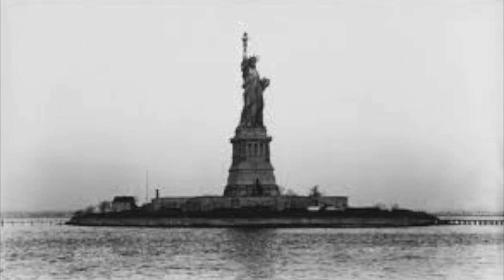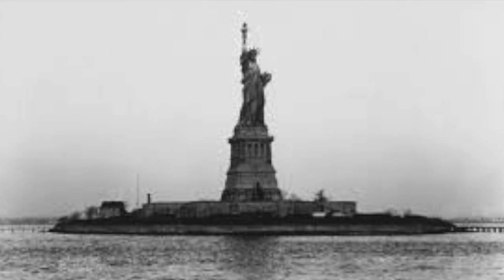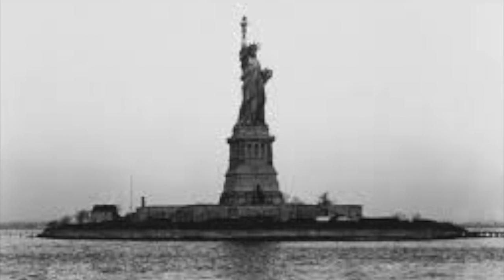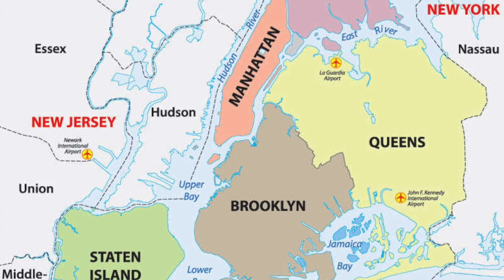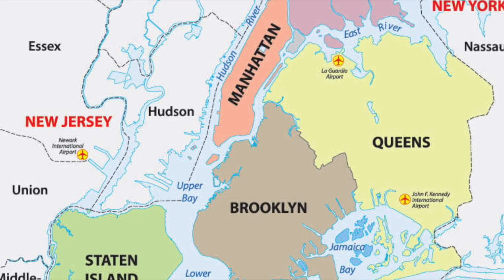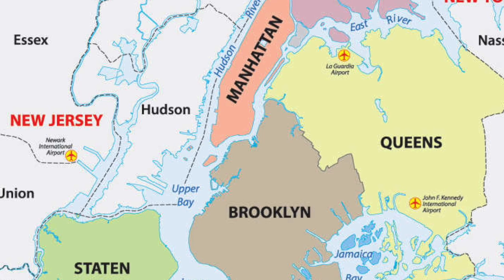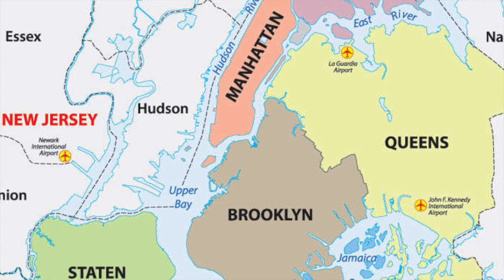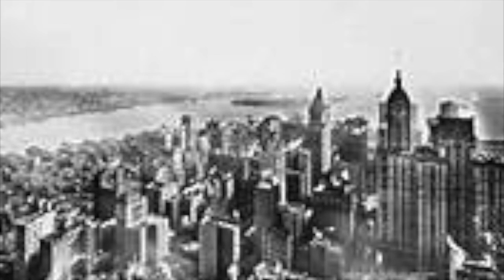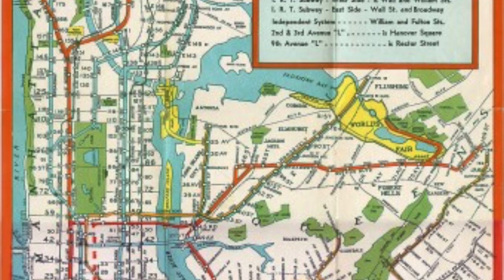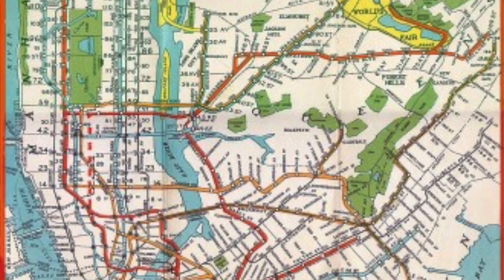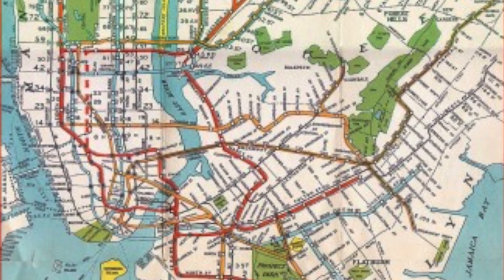The new arrivals settled across the five boroughs of New York City: Brooklyn, Queens, the Bronx, Staten Island, and Manhattan Island. By January 1, 1898, when the boroughs of New York consolidated, New York City had an area of 360 square miles and a population of 3.5 million people.